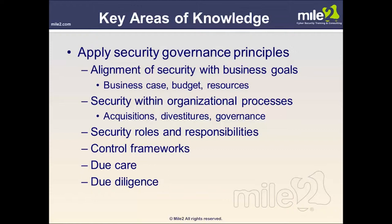Security does not happen by magic — it must be somebody's job. We must have clearly defined security roles and responsibilities. Those roles vary according to a person's level of responsibility within the organization, but everyone must realize that security is actually a part of their job requirement. We'll look in later domains at system ownership and information ownership and those with a higher level of responsibility for the protection of information assets. Today we have a wealth of control frameworks and proven standards available. The CISSP should consider the use of these control frameworks and be familiar with what frameworks and best practices are available when developing a security strategy and security plan.